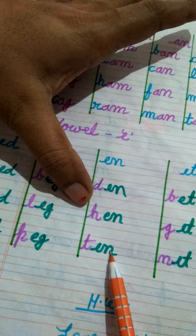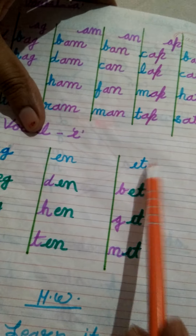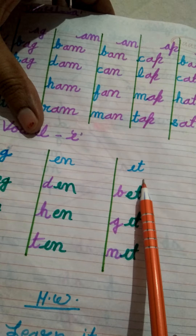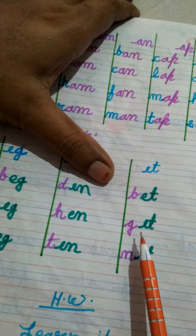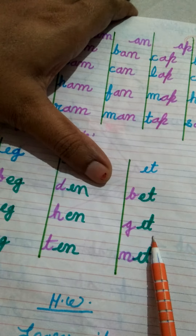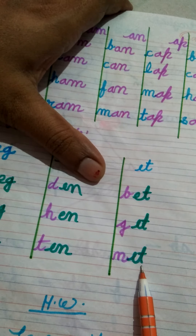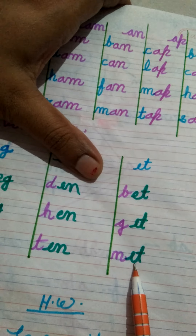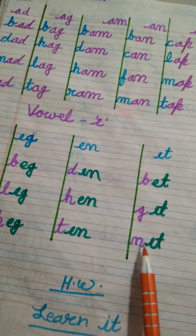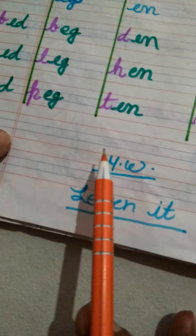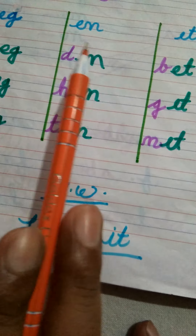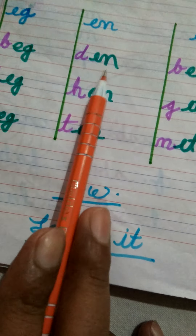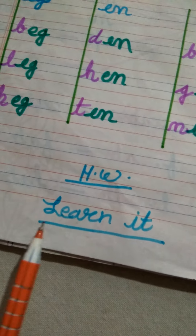A, G family से related: B + Ag = Bag, H + Ag = Hag, L + Ag = Lag, T + Ag = Tag. Next — M family.